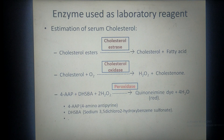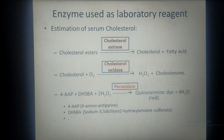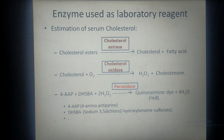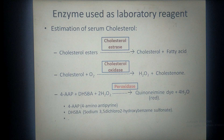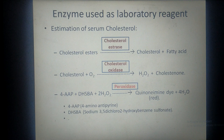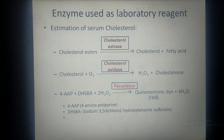The free cholesterol formed, along with free cholesterol already present in the blood, combines with oxygen in the presence of the enzyme cholesterol oxidase to form hydrogen peroxide and cholestinone. This hydrogen peroxide is acted upon by a third enzyme, peroxidase, in the presence of two reagents — 4-amino antipyrine and DHSB (sodium-3,5-dichloro-2-hydroxybenzene sulfonate) — giving rise to the quinoneimine dye, which is red in color. The intensity of this red color depends on the amount of cholesterol, measured using a colorimeter.